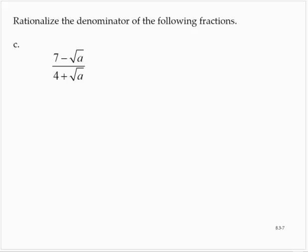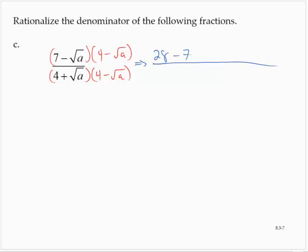The third problem is 7 minus the square root of a divided by 4 plus the square root of a. To rationalize the denominator, I will multiply by 4 minus the square root of a, and multiply the numerator by that same quantity. That gives me 28 minus 7 times the square root of a minus 4 times the square root of a plus the square root of a squared, and the denominator is 16 minus 4 root a plus 4 root a minus the square root of a squared.